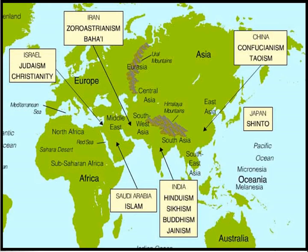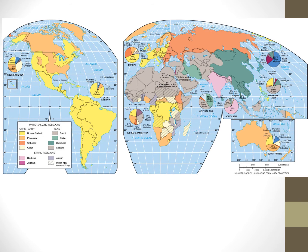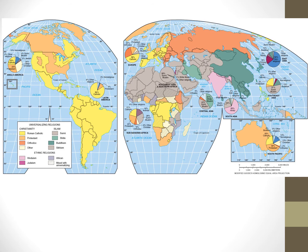So now that we know where these religions began, let's look at where they have spread to. This map shows the distribution of different religions around the world, and also adds pie charts to help illustrate the homogeneity or diversity of religion within a region. Notice that Hinduism and Judaism have remained relatively clustered near their hearths, while Buddhism, Christianity, and Islam have spread to encompass areas far from their hearths. For Christianity and Islam, the two religions with the largest global following, the major branches are separated on our categorical map. Islam has two major branches — Sunni, found in gray, is the clear majority of the Muslim world.